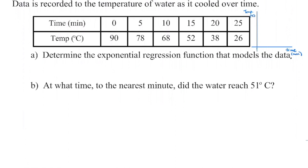In our final example, we're recording the temperature of water as it cools over time. First, identify what are the two things we're comparing — in this case, temperature and time. The temperature of the water depends on the time at which it was taken, so time is our independent variable on the x-axis and temperature is our dependent variable on the y-axis. The question specifically tells us to use exponential regression; if it doesn't, you'd look at the data and figure out what pattern those data points most closely resemble.